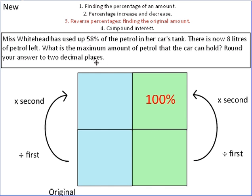Miss Whitehead has used up 58% of the petrol in her car's tank. There is now 8 litres of petrol left. What is the maximum amount of petrol that her car can hold? Round your answer to two decimal places. Again, let's highlight the key information. Like I said, you're always going to be able to fill in three of the boxes out of the four, 100% always being one of them. We know we've got 58% here, this percentage of yours goes on the right side, and 8 litres here.